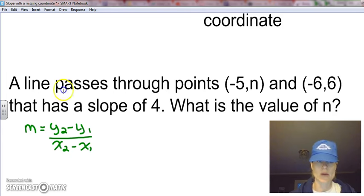So this is our formula for finding slope. We're basically going to plug in what we have. A line passes through the points (-5, n) and (-6, 6) that has a slope of 4. So we know this is our x1, y1, and this is our x2, y2, and we know this is our slope, our m. So we're going to plug in our values here. We know our m is 4, so we're going to replace the m with 4.